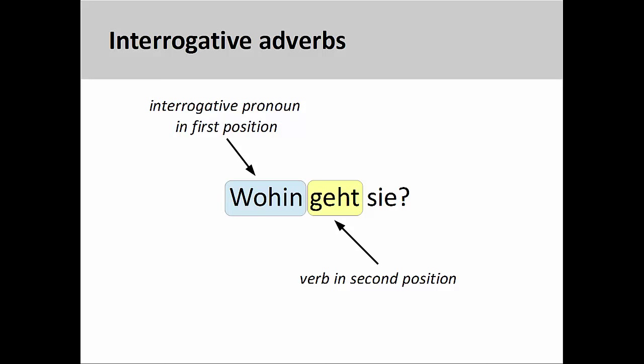For example, in the sentence here, 'Wohin geht sie?' (Where is she going to?), the interrogative adverb 'wohin' inquires about the direction of an activity performed by the subject of the sentence.